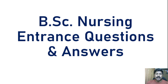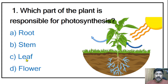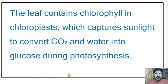BSc nursing entrance questions and answers. First question: which part of the plant is responsible for water synthesis — root, stem, leaf, or flower? This question is from botany. The correct answer is leaf. The leaf contains chlorophyll in the chloroplast, which captures sunlight to convert carbon dioxide and water into glucose during photosynthesis, and at that time it produces oxygen.